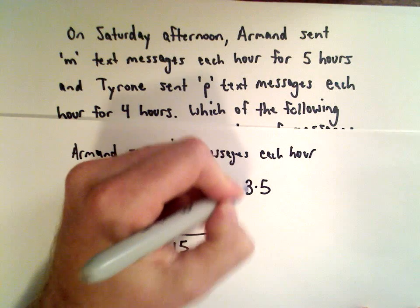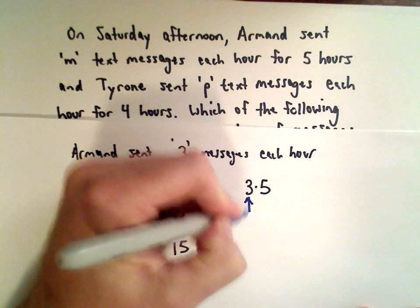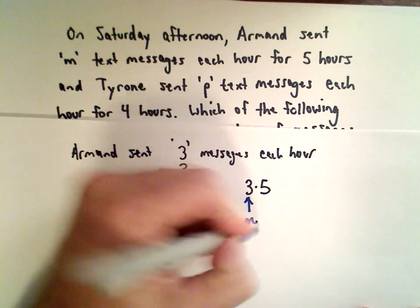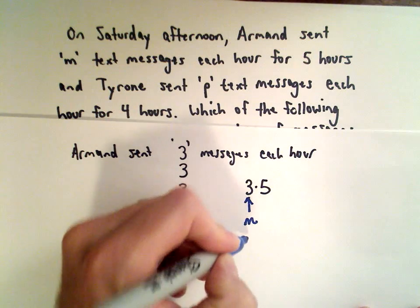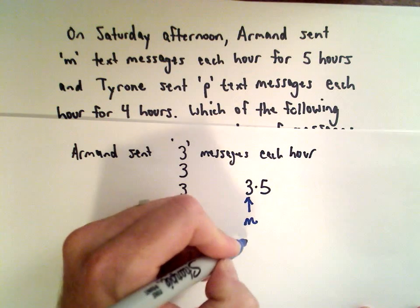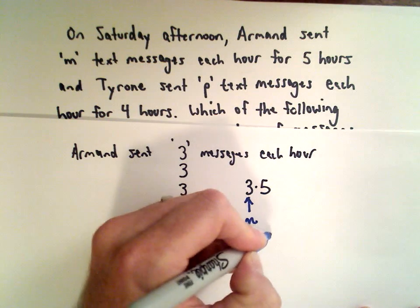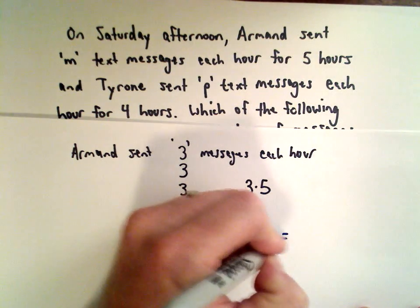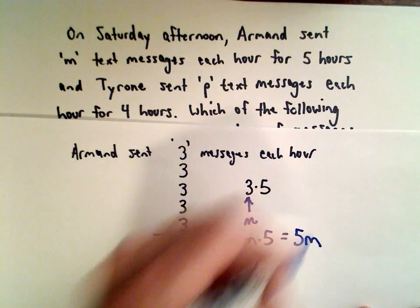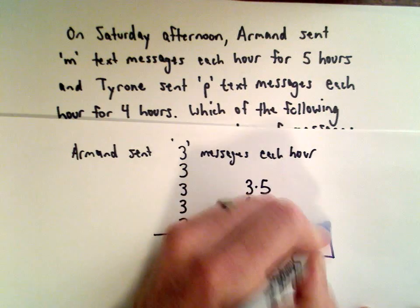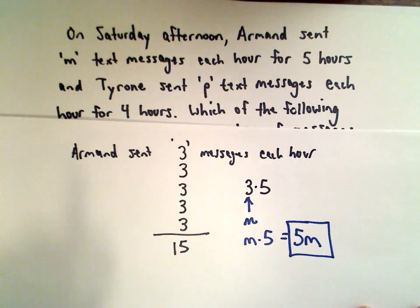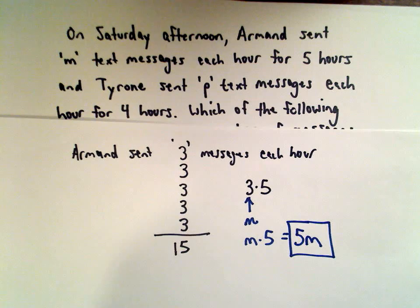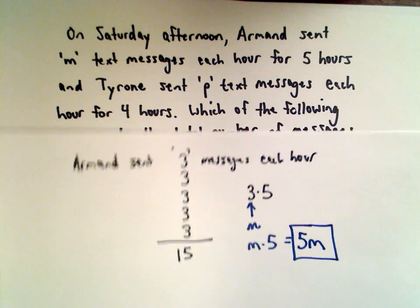Instead of 3, that was the value we used for M. So we would have M multiplied by 5, or 5M messages total sent by Armand. So Armand sent 5 times M messages.